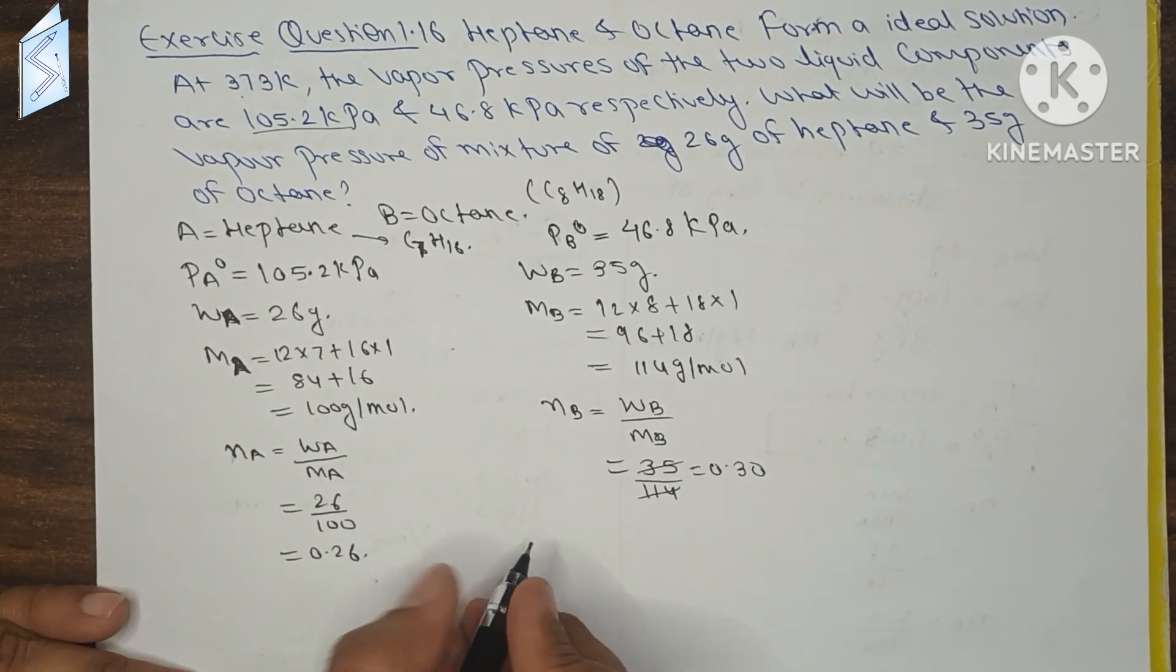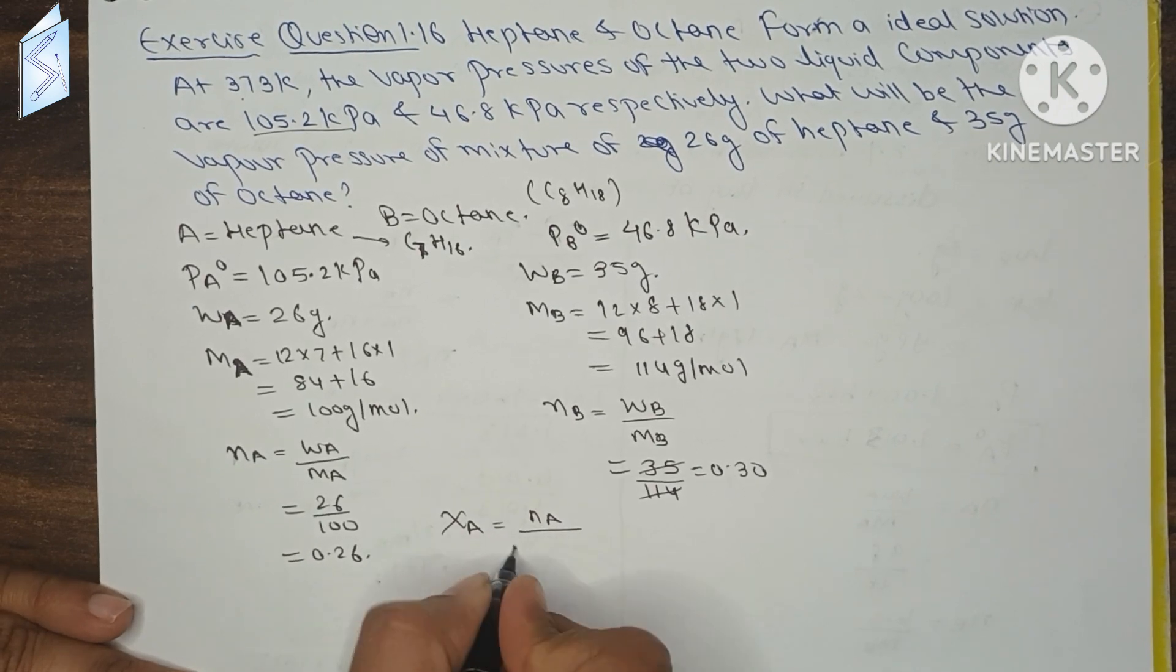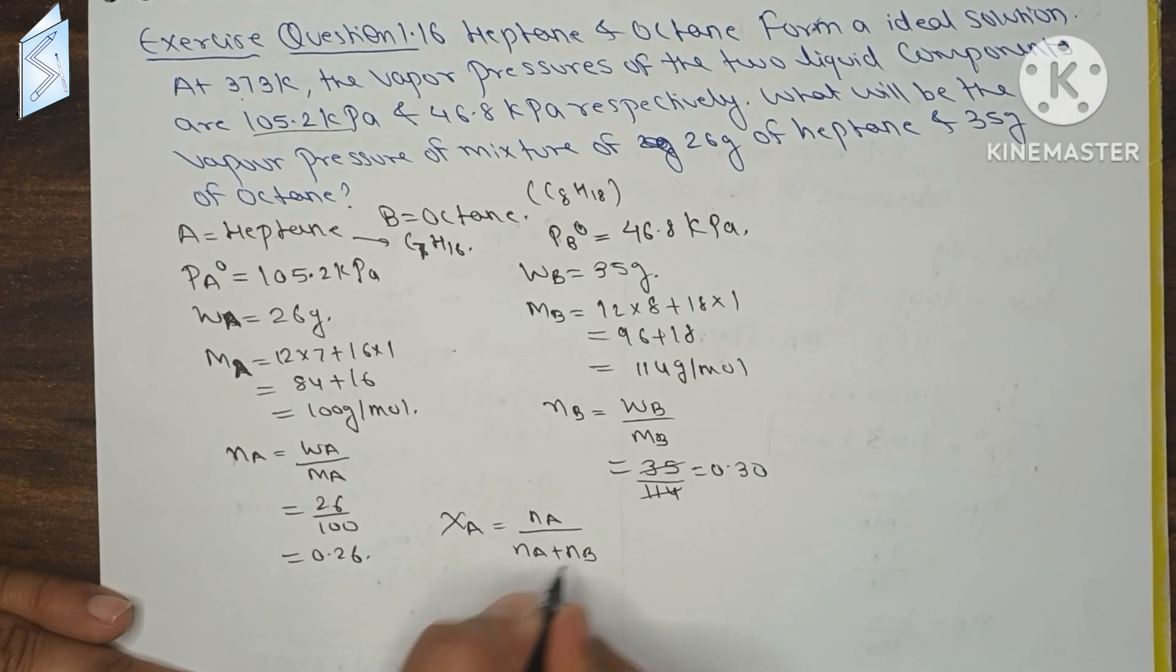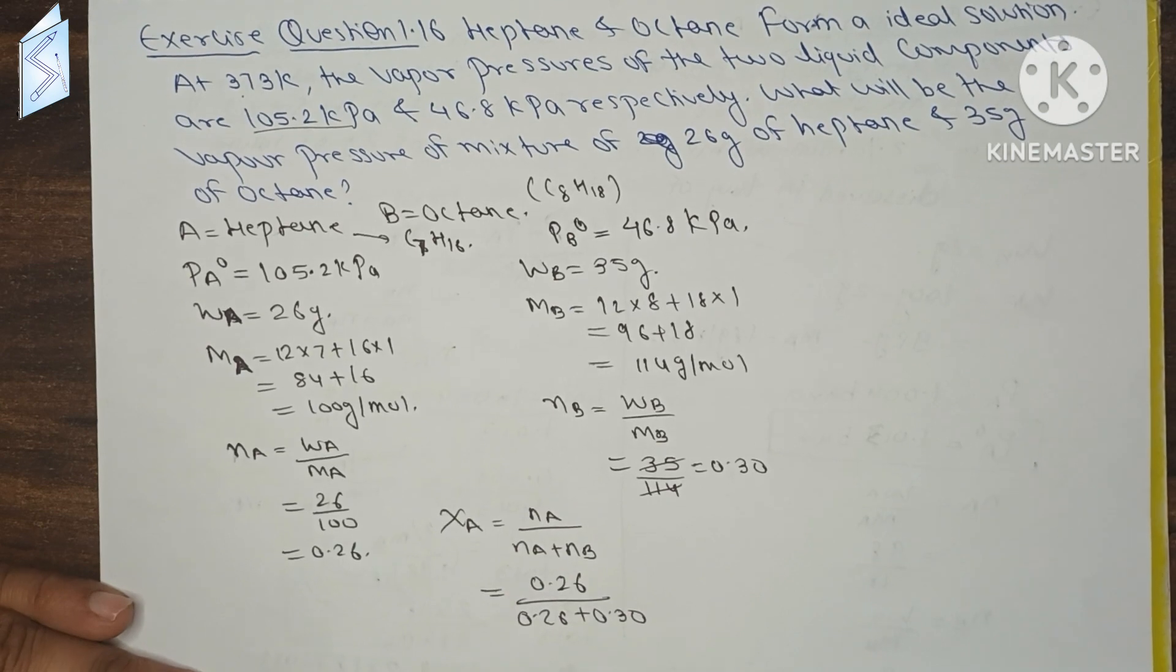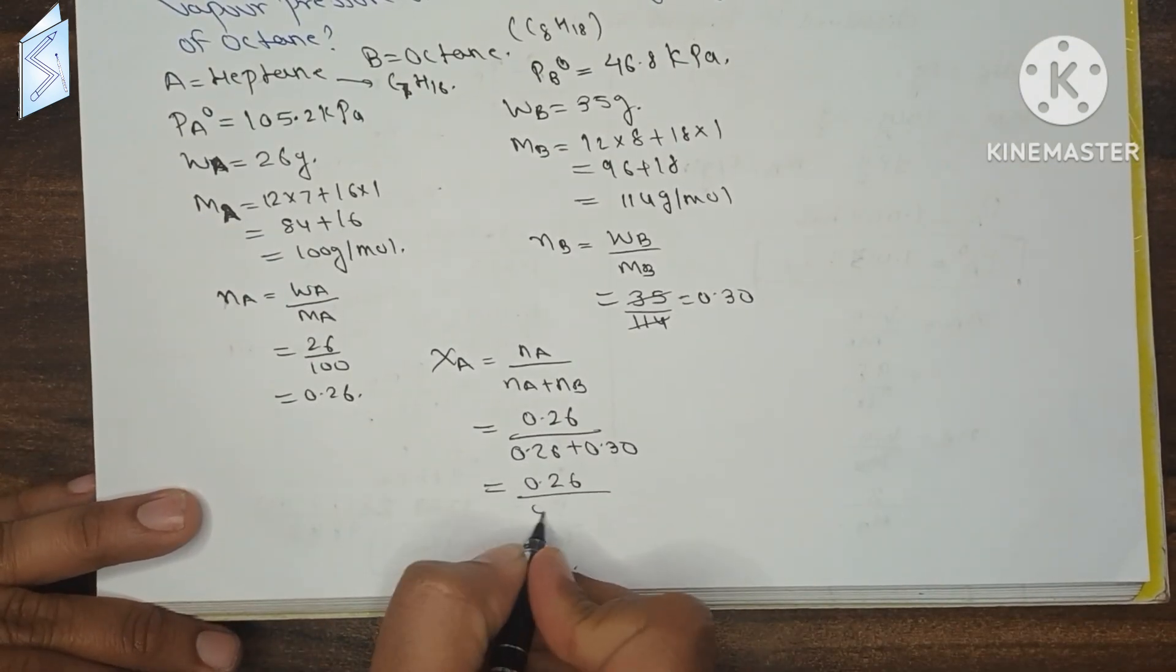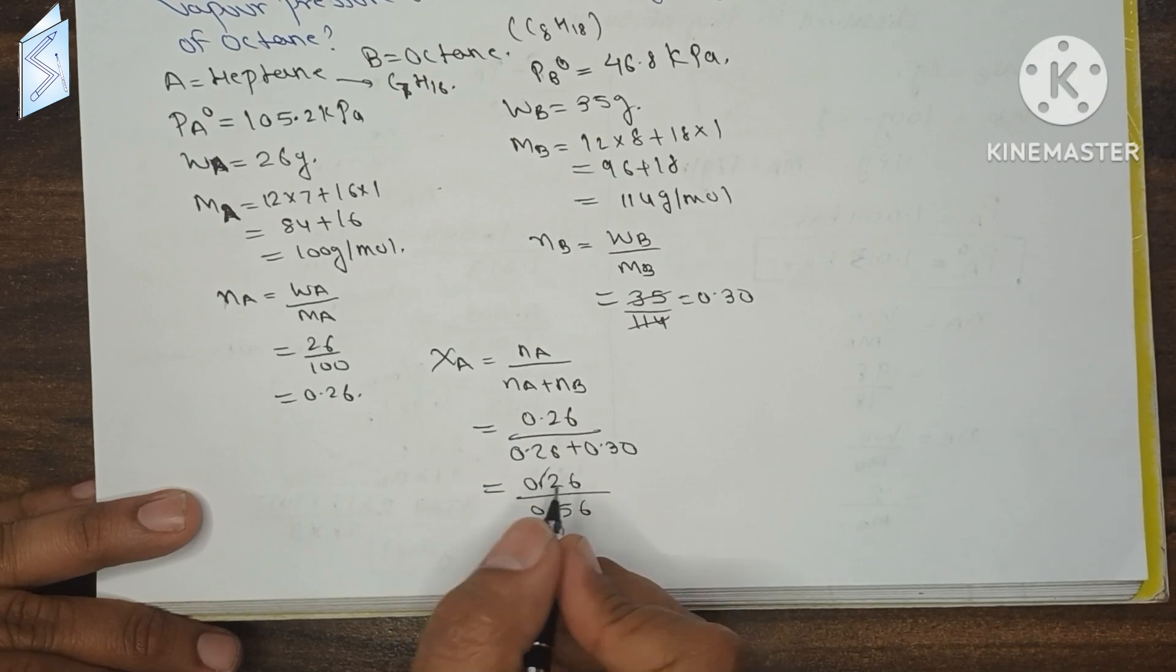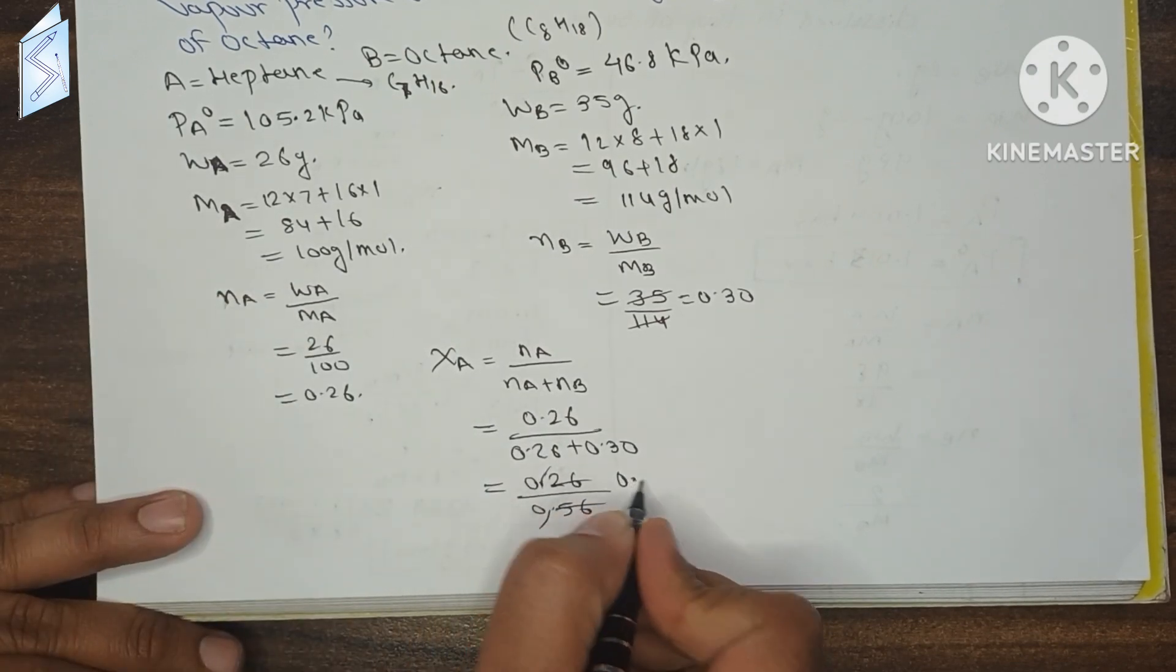Now we will do mole fraction. XA will be NA divided by NA plus NB. NA is 0.26, NB is 0.30. This will be 0.26 divided by 0.56, which equals 0.46.